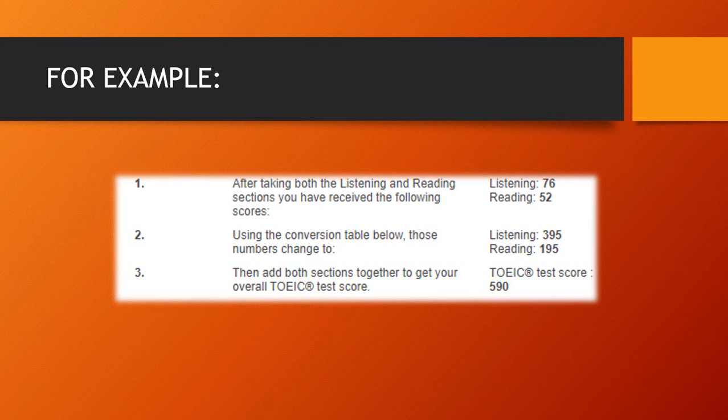Listening, 395. Reading, 195. Then add both sections together to get your overall TOEIC test score. TOEIC test score, 590.